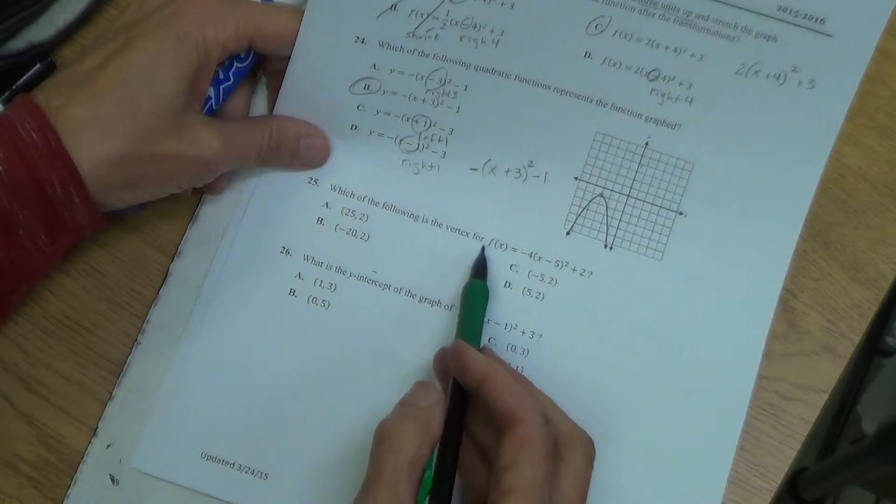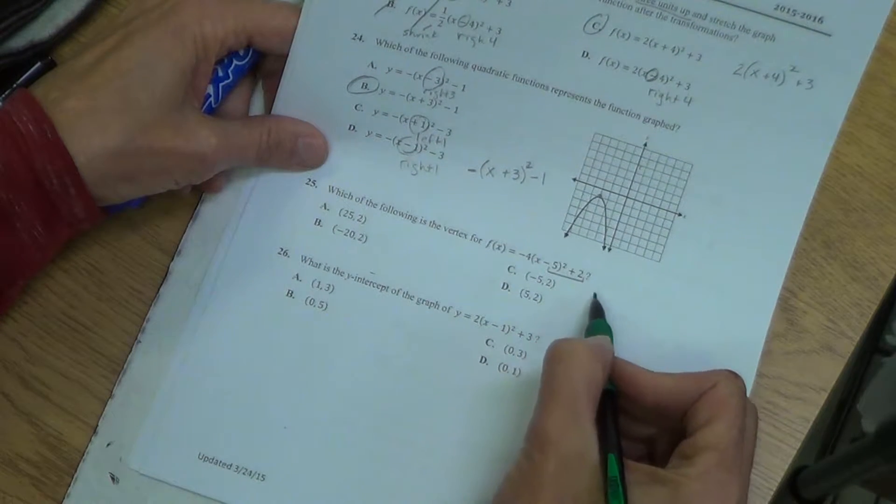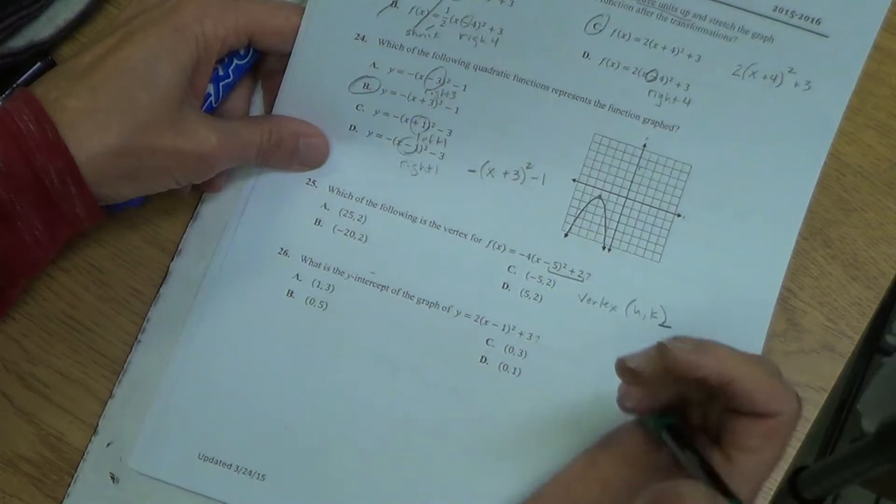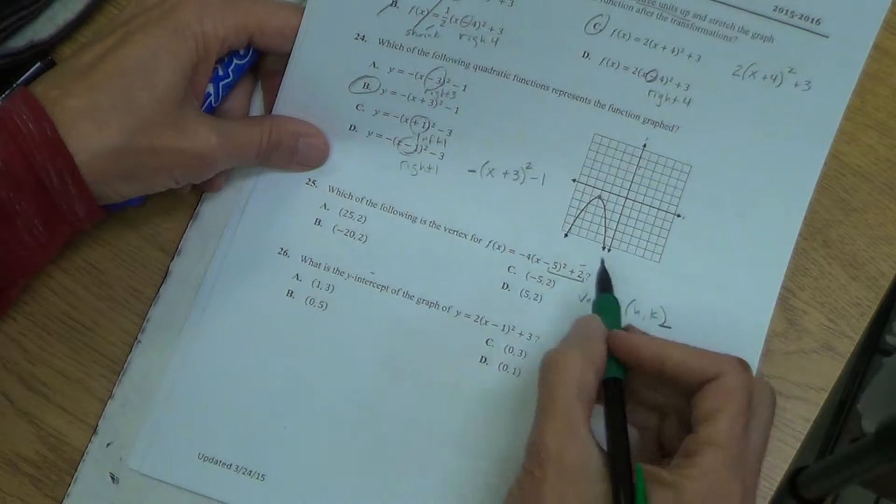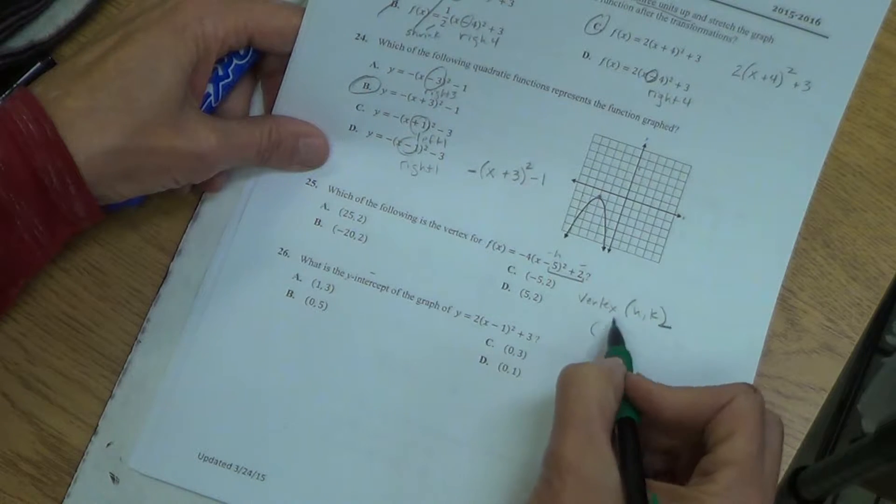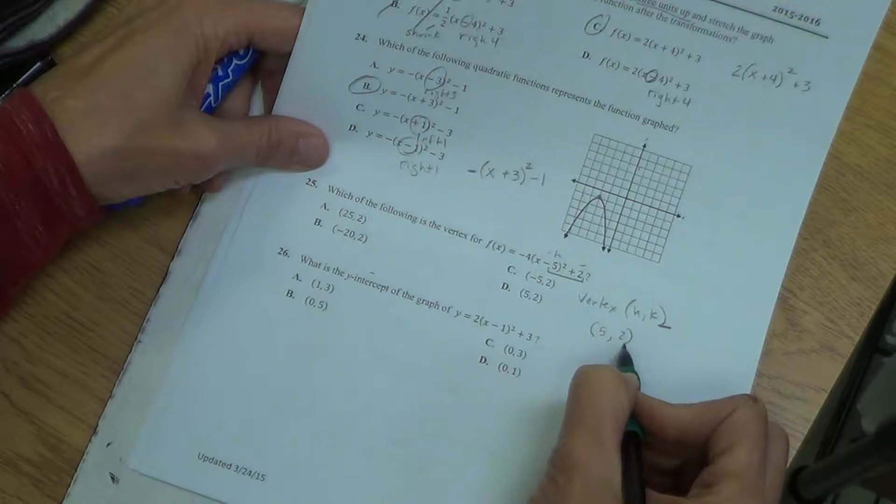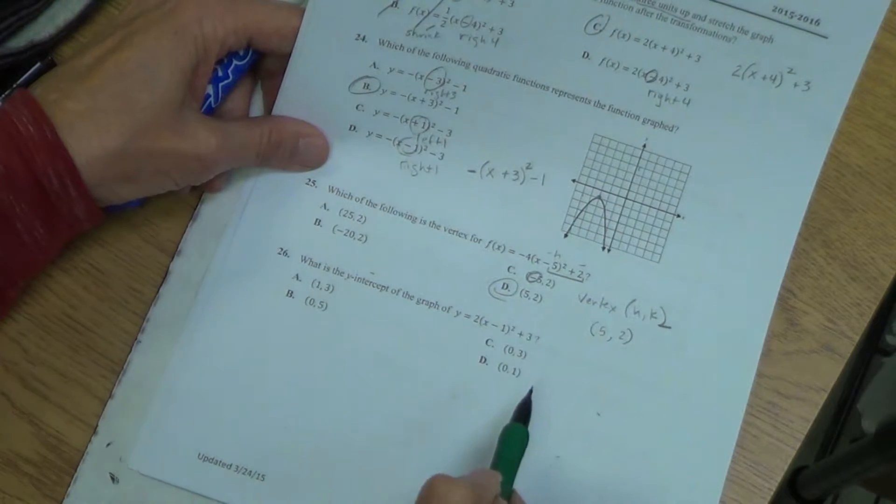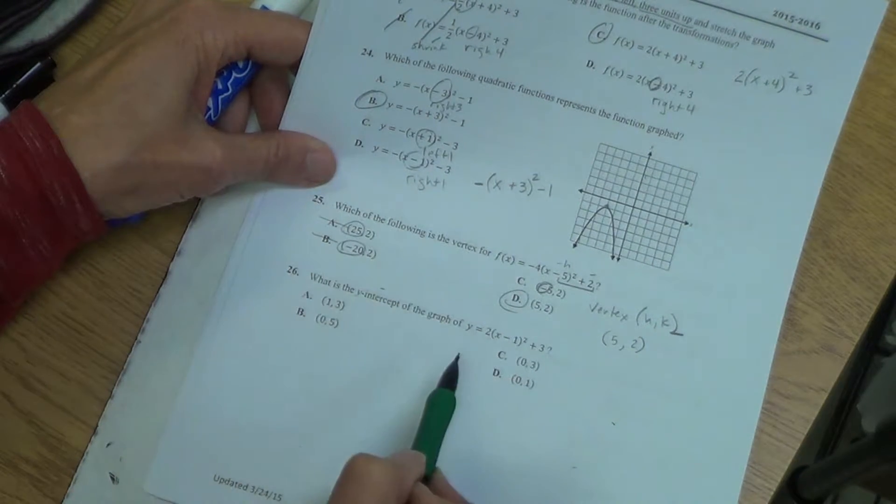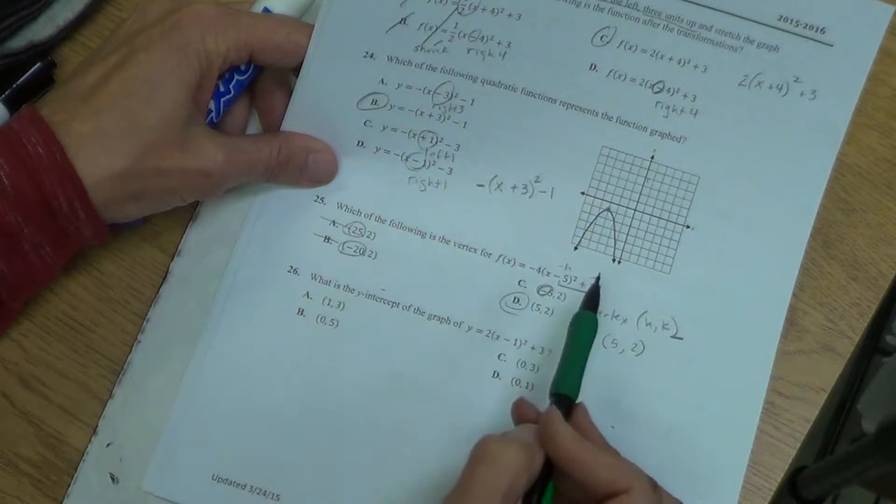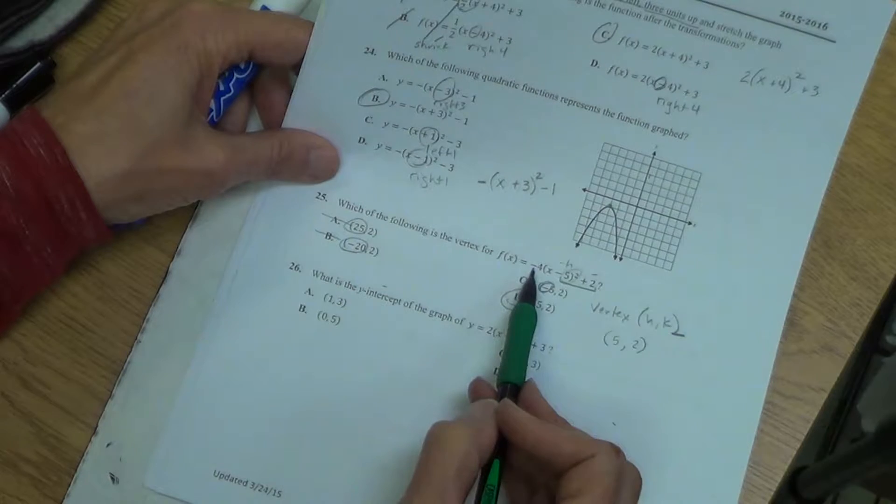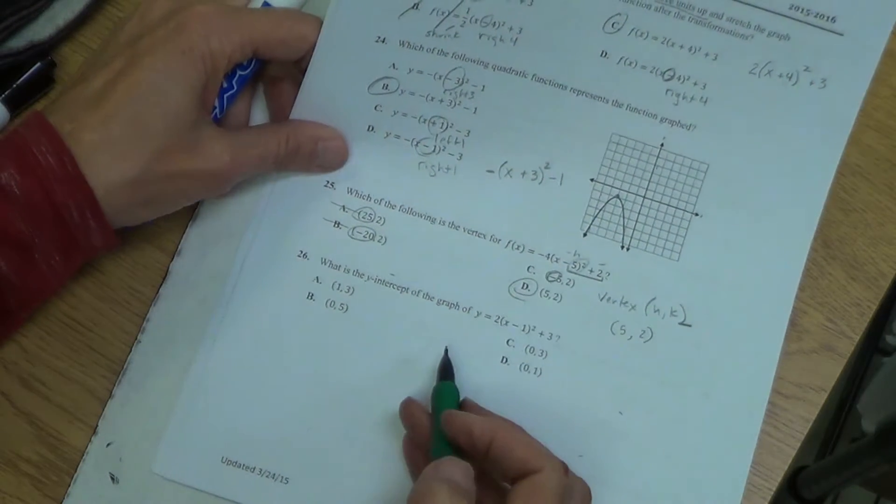This one is right one and down one. Or not down one. I'm sorry. That would be left one. Because our positive inside the h value goes opposite of how it appears. And this one would be right one. So that shows what's incorrect with the others.